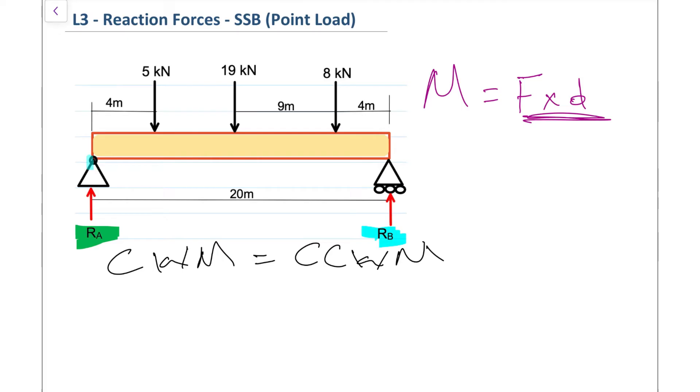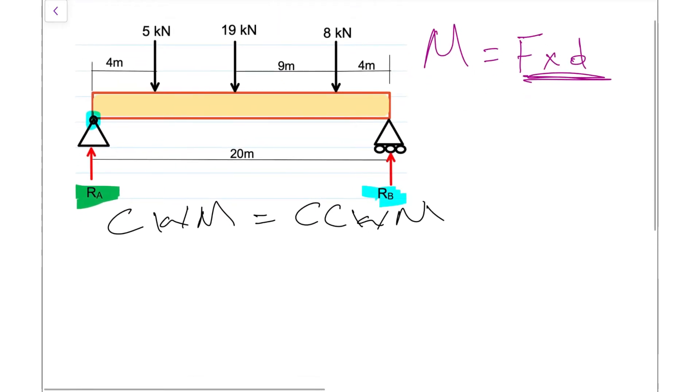I'm going to take right here at R_A to be my pivot point. I'm going to use that to calculate our moments. The first force I'm interested in is this one right here, that 5 Newtons. We can see its perpendicular distance from R_A is 4 meters, so I'm going to do 5 multiplied by 4. I'm having it on the clockwise moment side because if my pivot point is at R_A, then this force will be trying to do clockwise rotation.